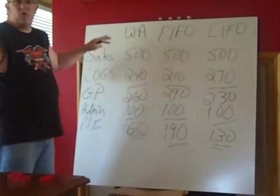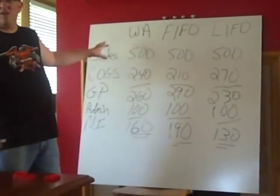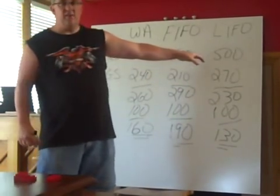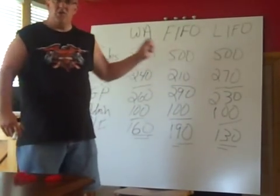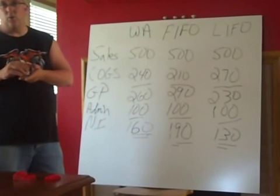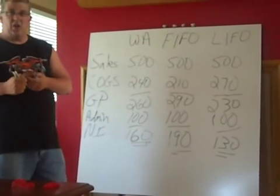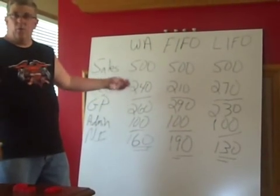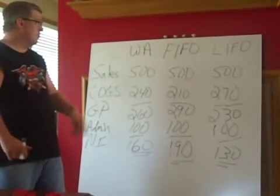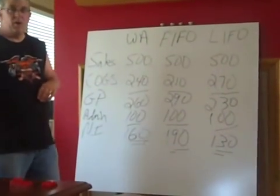We're going to use an imaginary income statement here. In all cases, we have sales of $500. The inventory method we use is not going to change our sales revenue — whatever we sold it for is what we sold it for. So we're going to have $500 of revenue all the way across the board.